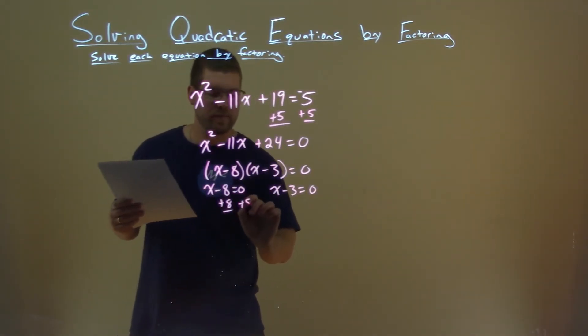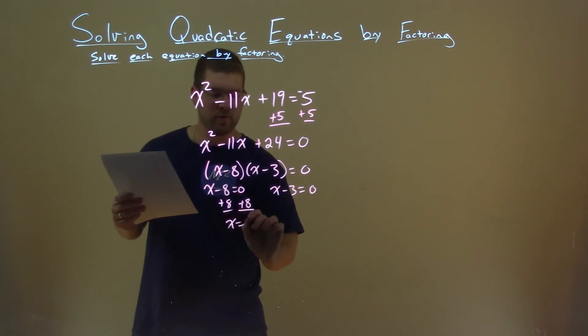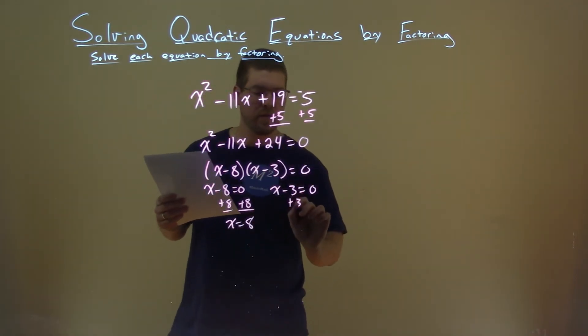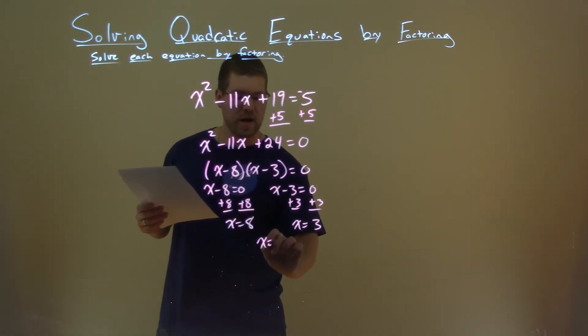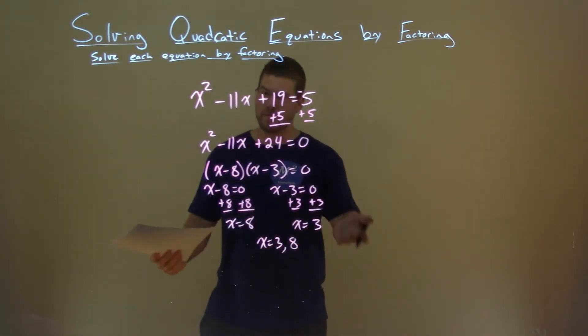We add an 8 to both sides and we have x equals a positive 8. Add a 3 to both sides and x equals a positive 3. And so my two solutions here are x equals 3 and 8. And so that is our final answer.